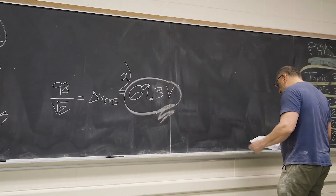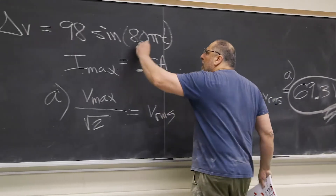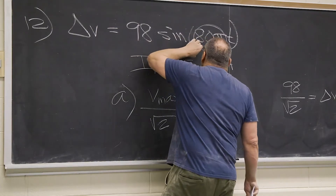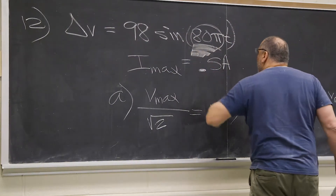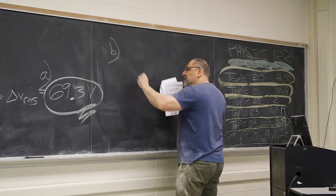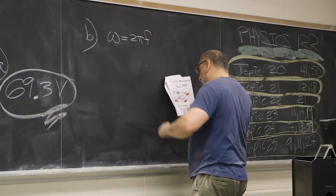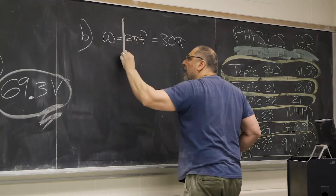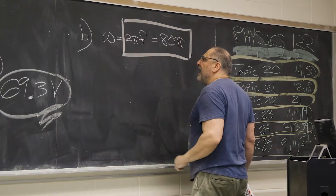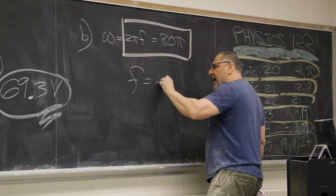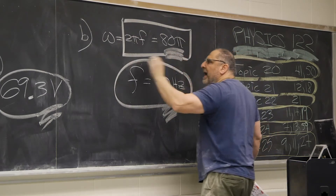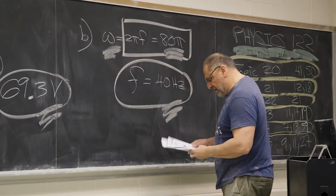Part B asks for frequency. Looking at the equation, remember this is omega — sine of omega T. So omega equals 2 pi f equals 80 pi. Divide both sides by 2 pi, and you get f equals 40 hertz — 40 cycles per second. That's omega, and that's F.